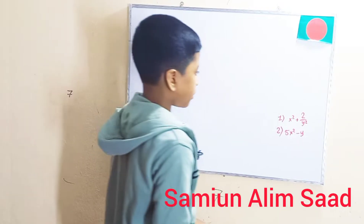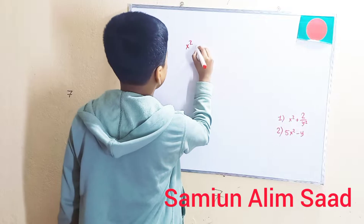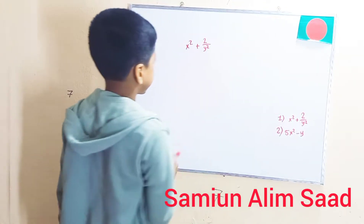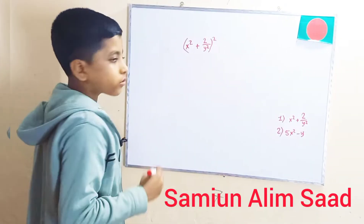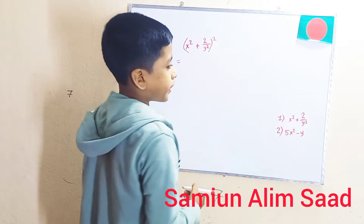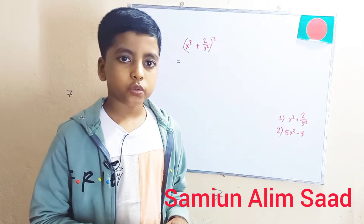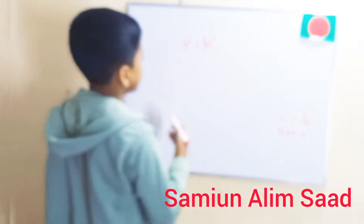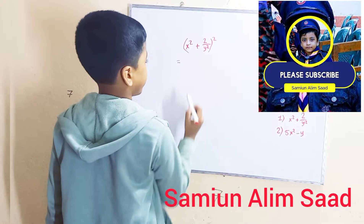The first problem we're going to encounter is x squared plus 2 over y squared, whole square. So we're going to solve this problem. This is equal to — remember the formula of a plus b whole square? It's a squared plus 2ab plus b squared. So let's imagine that x squared is a, and 2 over y squared is b.